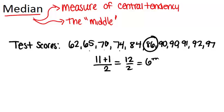Notice what we have here is 5 numbers that are below the median and exactly 5 numbers that are above. So that's why this number is the median.